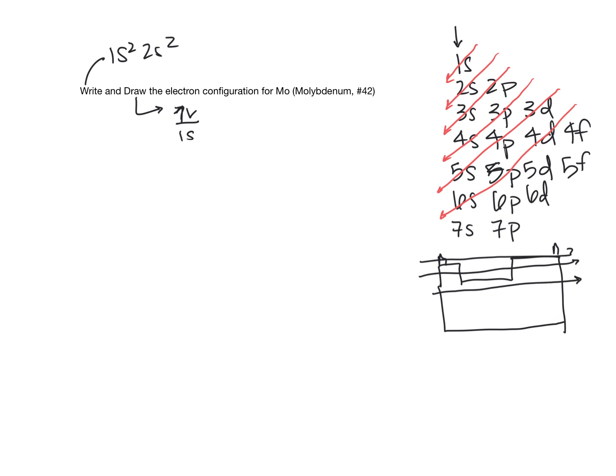So as long as you know that the 3d is in the fourth row, you should be able to figure these out. So when we look at molybdenum element 42, which is roughly here-ish in your periodic table,